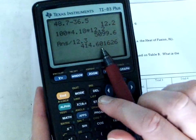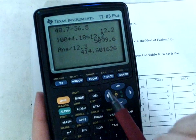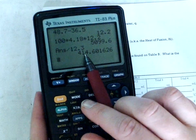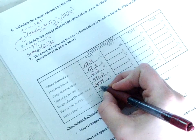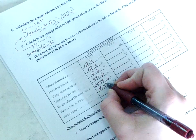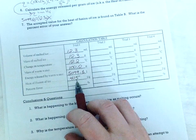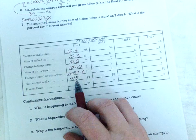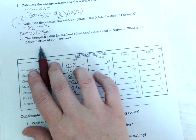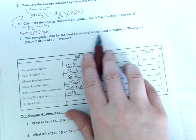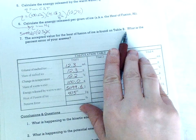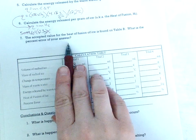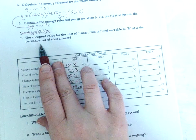Okay. I'm getting 414.6 but I am going to round to just 3 sig figs. I'm going to write 415. Now, is that close to the right answer of 334? Hmm. The accepted value for the heat of fusion of ice is found on table B. It's 334. What is the percent error of your answer? You have an equation for a percent error.